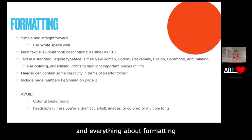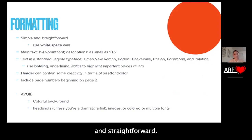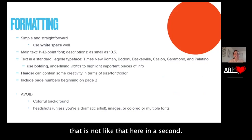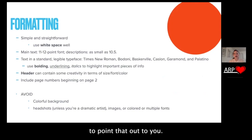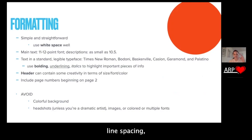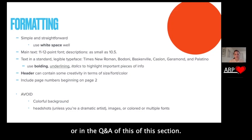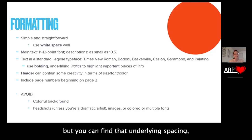Formatting. Everything about formatting is to make it skimmable, so it needs to be very simple and straightforward. There needs to be space between each entry — I'll show you an example that doesn't do this. Between each entry, I'd like at least a half line or six points of line spacing. You can find that under line spacing — at least a six-point line space between each entry — and it makes it more easily skimmable.